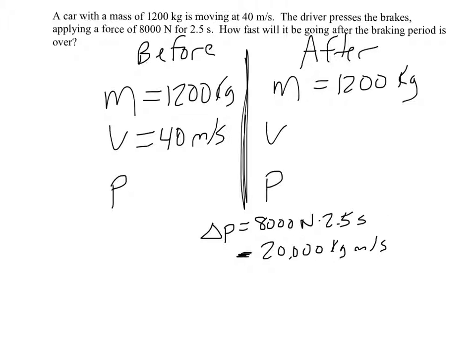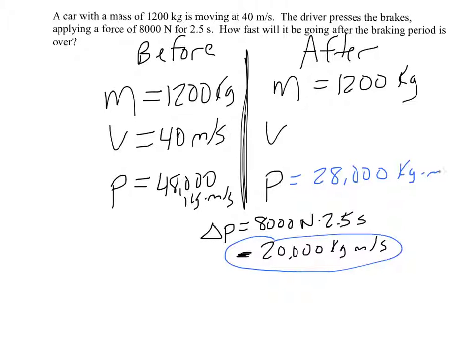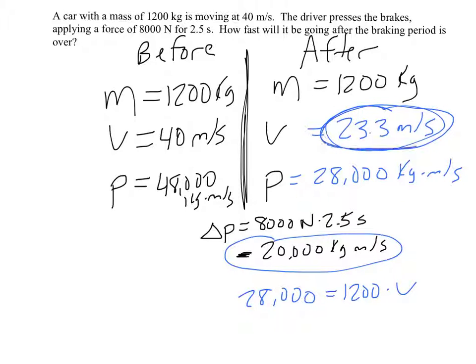So that's going to be negative 20,000. So their initial momentum, if we do this, 40 times 1,200, is 48,000. So if they hit the brakes, causing them to lose 20,000, their new momentum will be 28,000 kilogram meters per second. And then from that, we can find the velocity. So 28,000 equals 1,200 times V. 28,000 divided by 1,200, I get 23.3 meters per second. So if it's a slower speed, that's a reasonable answer.